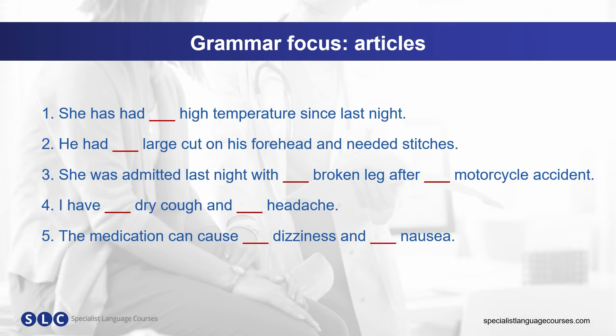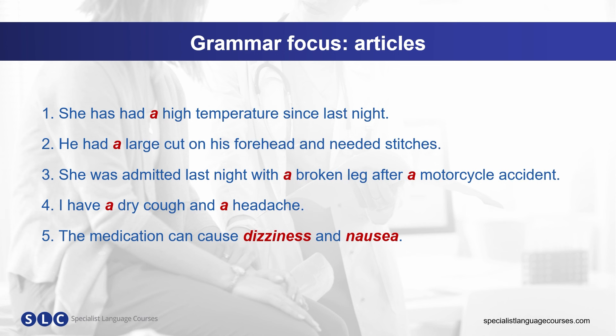Let's do some practice now. Look at these sentences, pause the video and complete the gaps with 'a', 'an', or no article. Here are the answers: She has had a high temperature since last night — temperature is countable. He had a large cut on his forehead and needed stitches — cut is countable. She was admitted last night with a broken leg after a motorcycle accident. I have a dry cough and a headache — cough and headache are countable. The medication can cause some dizziness and nausea — dizziness and nausea are uncountable, so no article is needed.